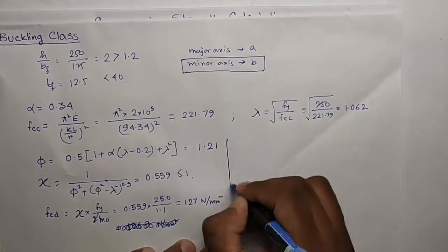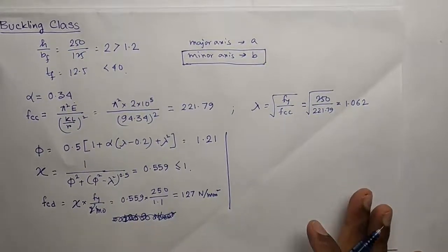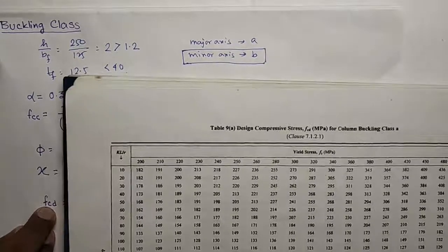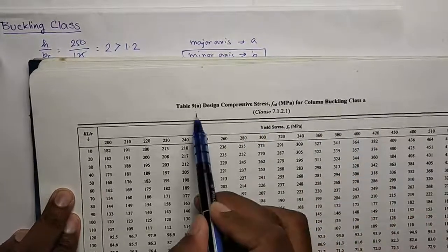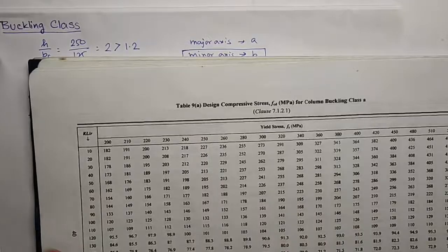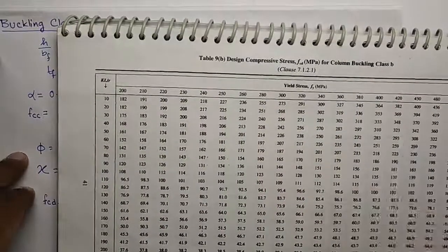Now I will show you how to calculate this Fcd from the table. You see the table line here, the design compressive Fcd for column buckling class A, table 9A. For column buckling class B, in our case the table is 9B.